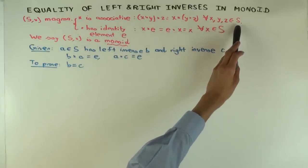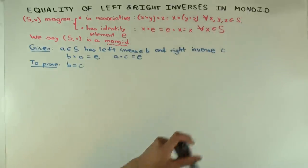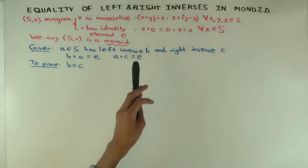Now when I say for all x, y, z in S, am I allowing x, y, z to possibly be equal? Yes, okay, good.